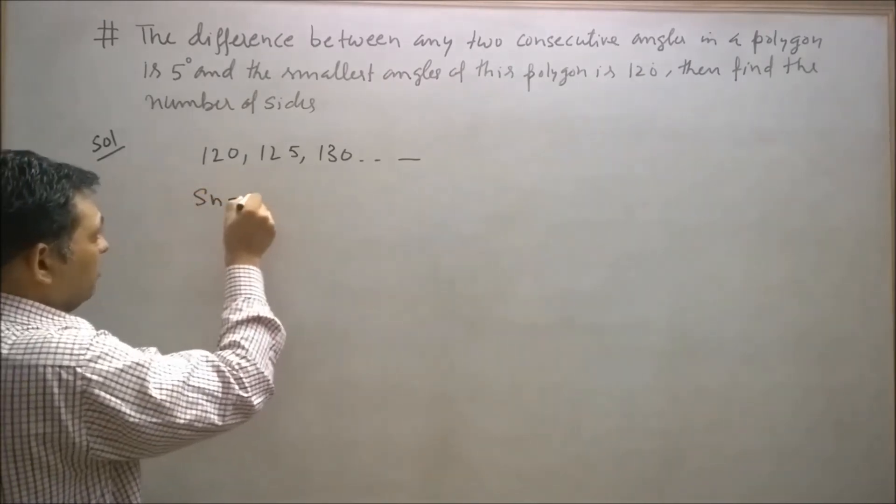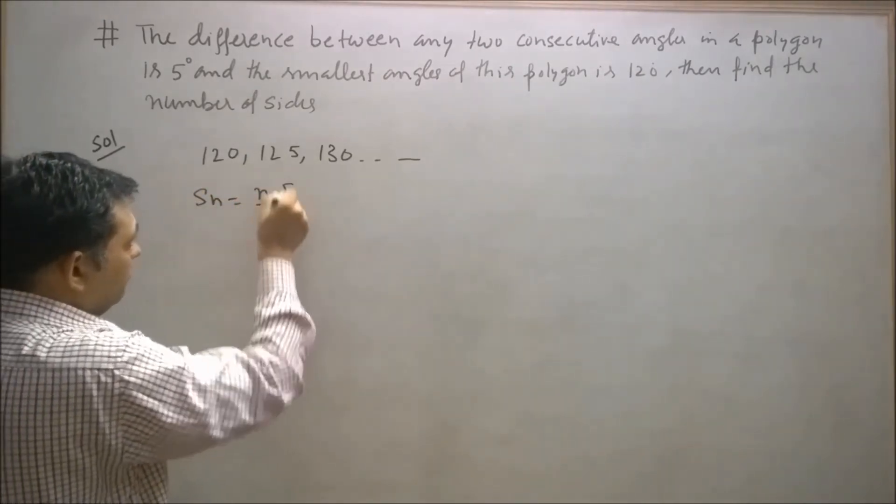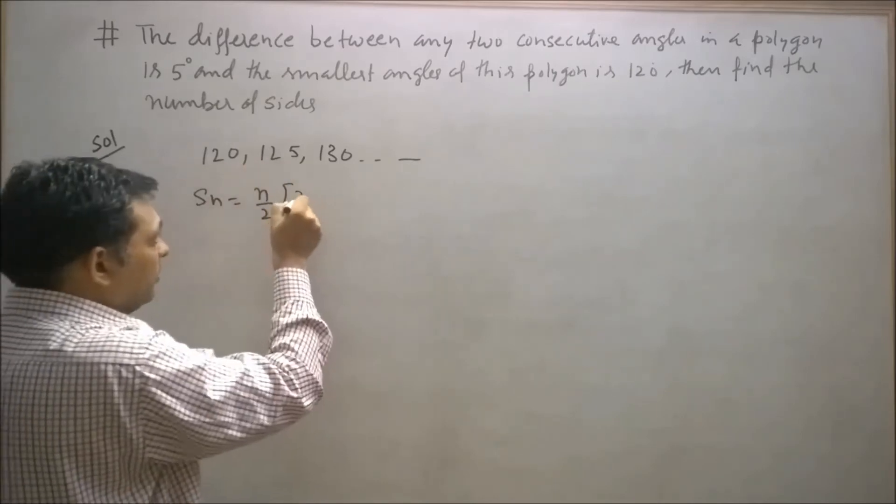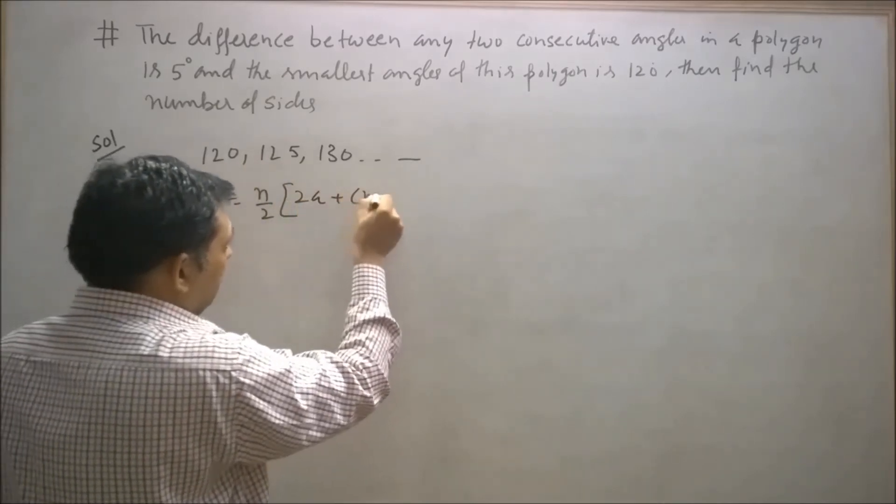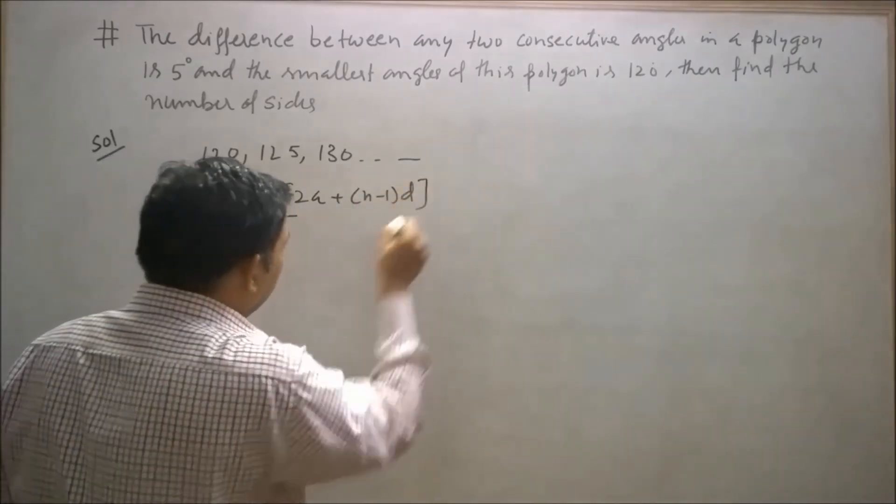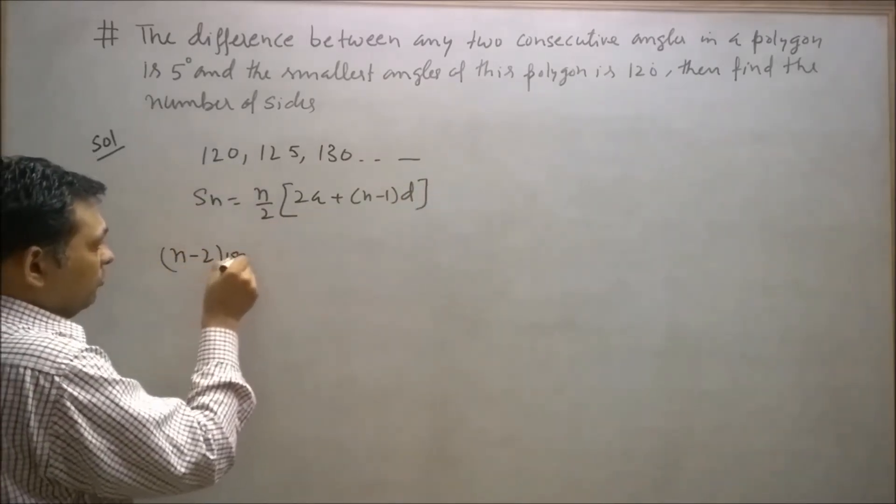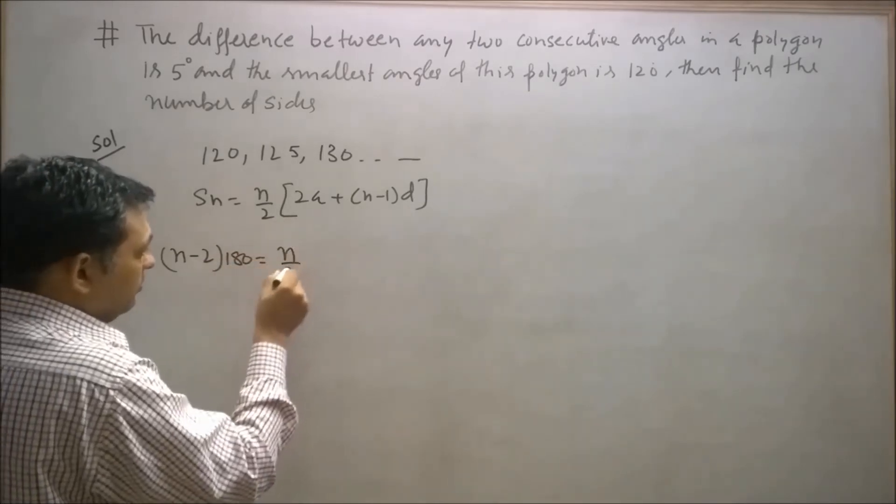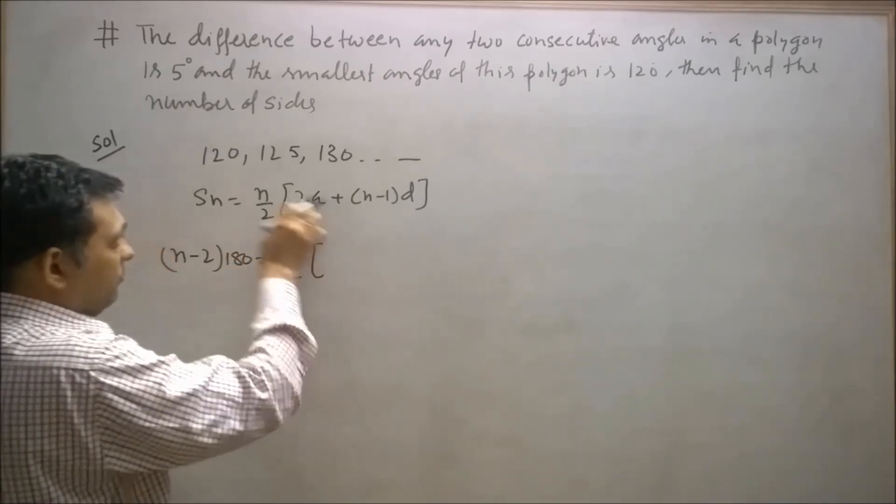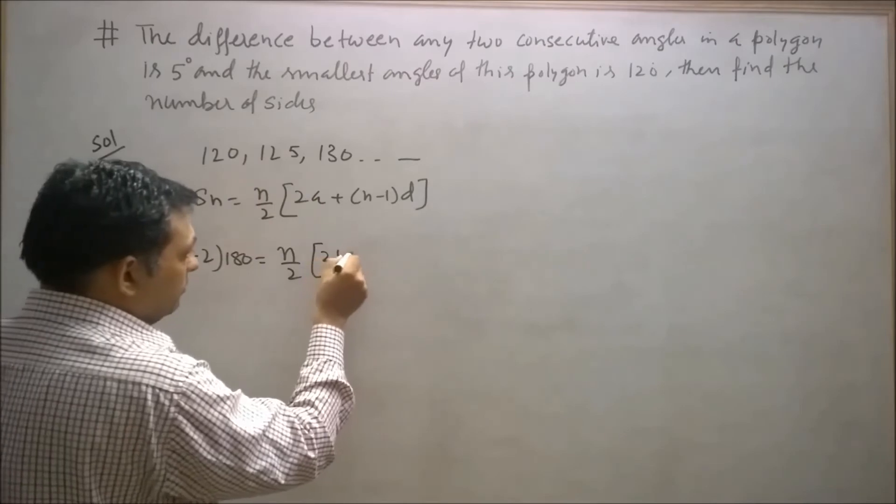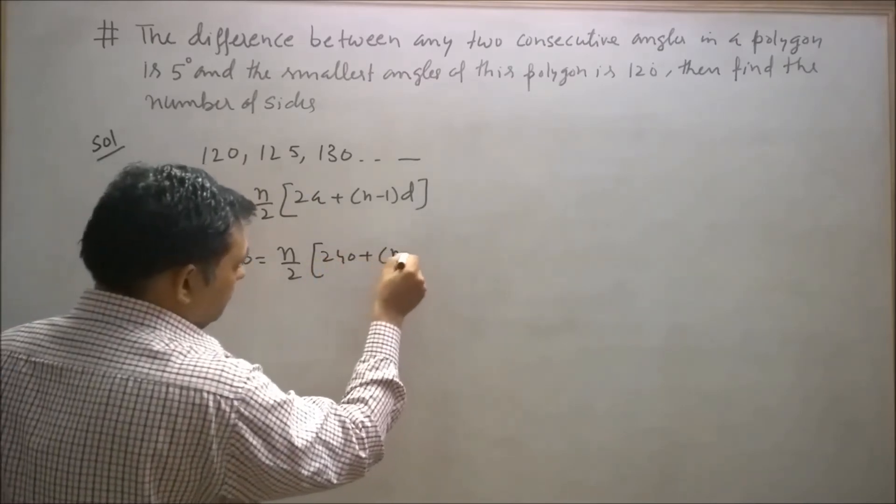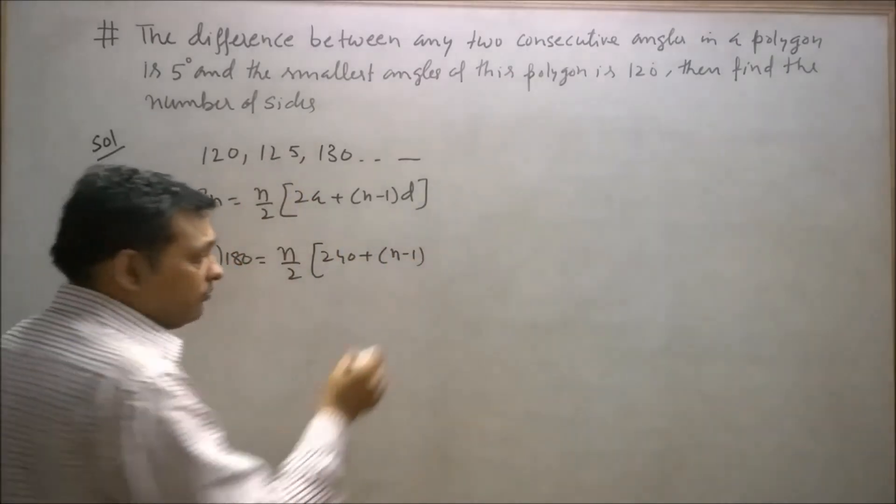We know that the sum of all interior angles of a polygon is (n-2) × 180. So Sn = (n/2)[2a + (n-1)d] where the first term is 240 and common difference is 5.